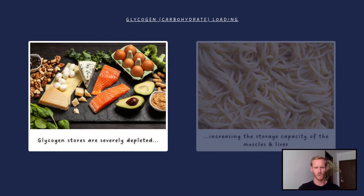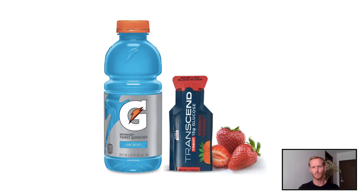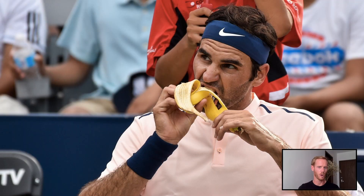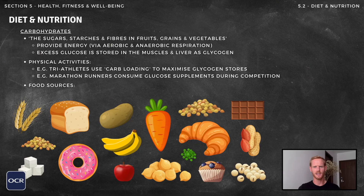Athletes who might benefit from consuming large quantities of carbohydrates include endurance athletes like triathletes and marathon runners who rely on stored glycogen during the latter stages of a race. A technique called carbohydrate loading is often used, which involves severely restricting carb consumption for several days before switching to a high-carb diet in the final 2–3 days before competition. Even with carb loading, glycogen stores may still run out, forcing performers to supplement with glucose gels, sports drinks or a small quantity of fruit during competition. Carbohydrate-rich foods include starchy root vegetables, bread, rice, pasta, fruit, pulses, breakfast cereals and anything containing sugar.